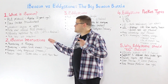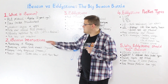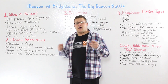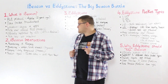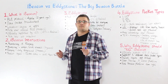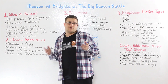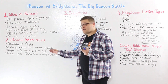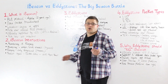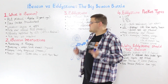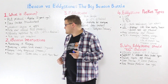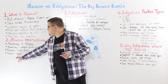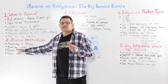iBeacon supports two basic interactions: monitoring and ranging. Whenever you enter or exit a beacon region, your app will be notified about that. Monitoring works in the foreground, background, and also when your app is killed. Ranging, however, works only in the foreground and it provides you with proximity data. When we monitor, we monitor for a beacon region. When we range, we range an individual beacon.